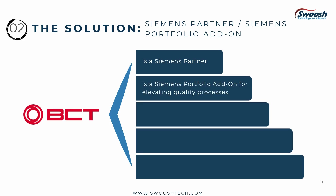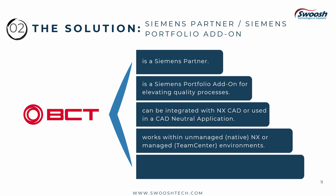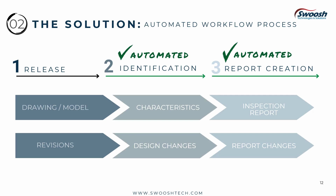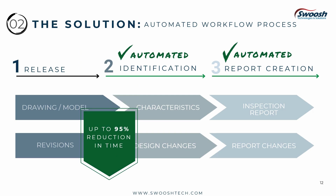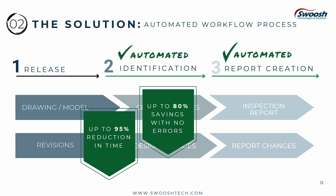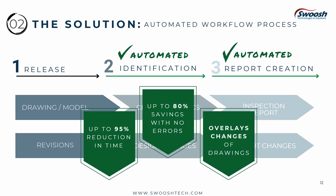BCT Technology is a Siemens partner and part of the Siemens portfolio add-on for elevating quality processes. BCT Inspector can be integrated with NX CAD or used as a CAD-neutral application. It works within unmanaged native NX or managed TeamCenter environments. The software also works with neutral formats like DXF, DWG, PDF, and TIFF — though using a neutral format is a more manual effort since the software uses pixels instead of direct CAD information. BCT Inspector replaces manual activities which require a lot of time and can be prone to errors, providing extreme savings in time in creating and managing characteristics. Mistakes from transcribing will be removed with direct data transfer, and the ability to compare revisions will be greatly improved.